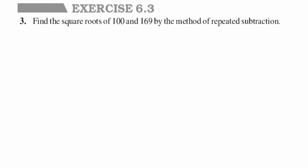Hey everyone, here is a question from Exercise 6.3, this is the third question, and this is from the chapter Square and Square Roots of Class 8. The question is: find the square root of 100 and 169 by the method of repeated subtraction. Repeated subtraction is one technique which is used to find out a square root.